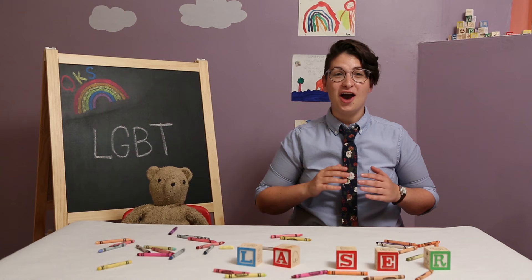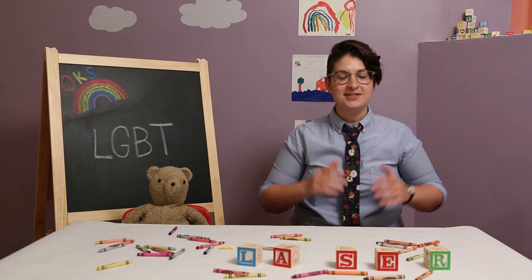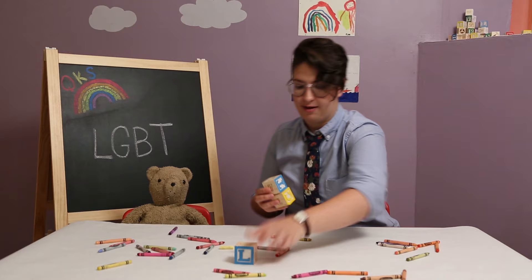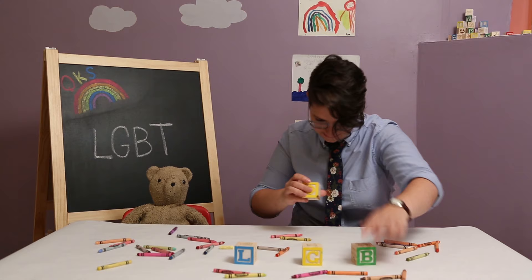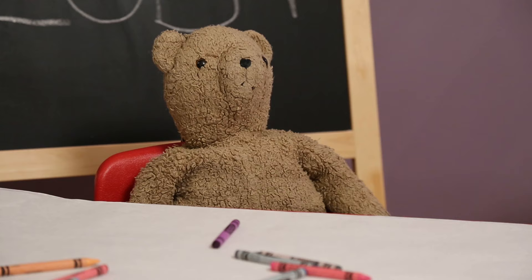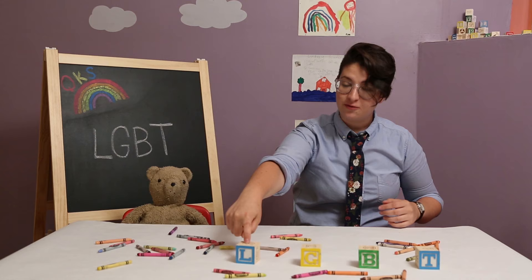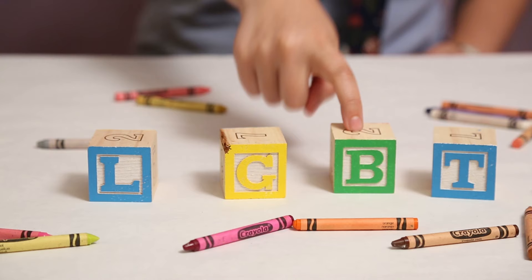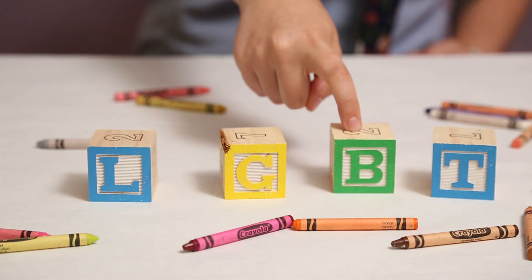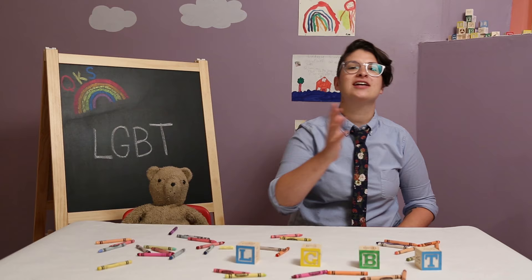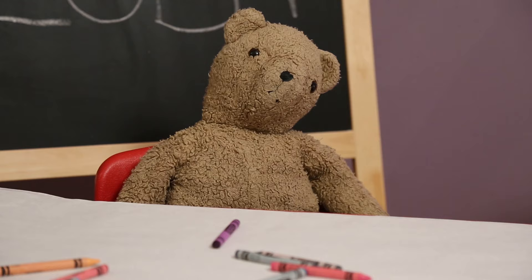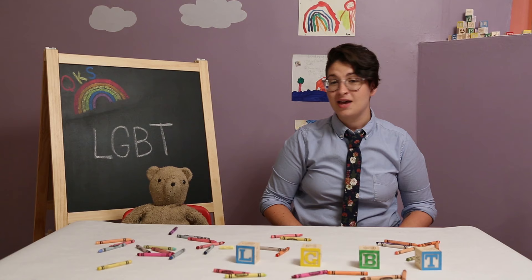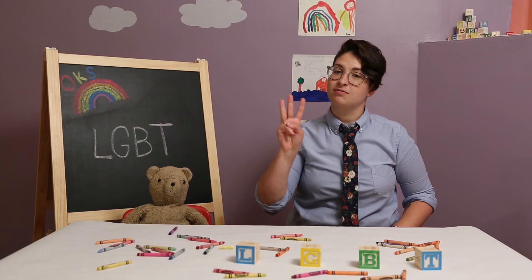Now that you know what an acronym is, let's talk about what LGBT stands for: L-G-B-T. So L is for lesbian, G is for gay — we already know what that word means. B is for bisexual and T is for trans or transgender. I definitely don't know what all of those mean. That's okay. We're going to talk about each of them over the next three episodes of Queer Kid Stuff.